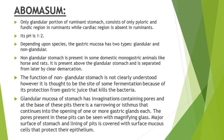The pH of abomasum is 1 to 2. The gastric mucosa of abomasum may be glandular or non-glandular. The non-glandular stomach is present only in some domestic monogastric animals like horse and rat. In horse and rats, this non-glandular stomach is separated from the glandular stomach by a clear demarcation. The function of the non-glandular stomach is not clearly understood, however it is thought to be the site of fermentation, because the absence of gastric juice means bacteria are not killed and they cause fermentation of food.